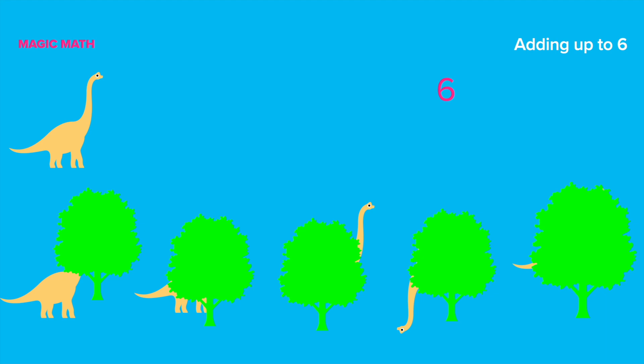First, let's count how many dinosaurs are not hidden behind the trees. One! Right! And how many dinosaurs are hidden behind the trees? Let's count. 1, 2, 3, 4, and 5. Impressive! So, 1 plus 5 equals 6.